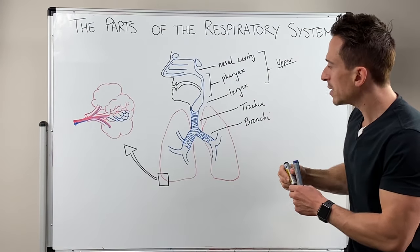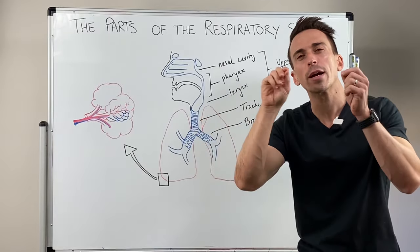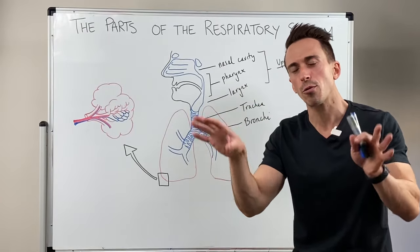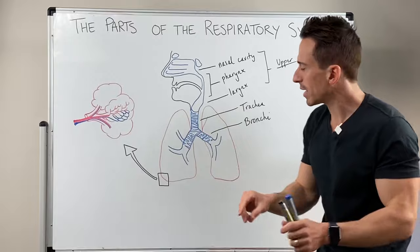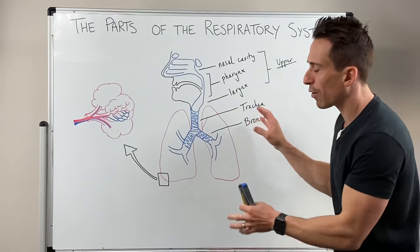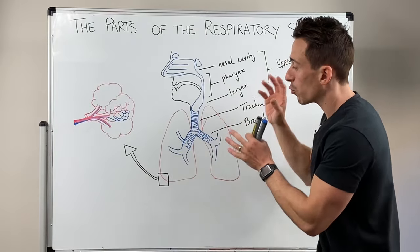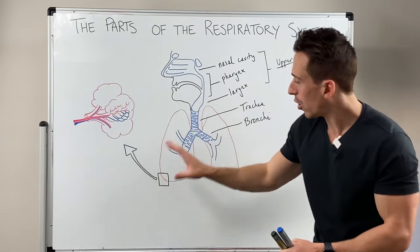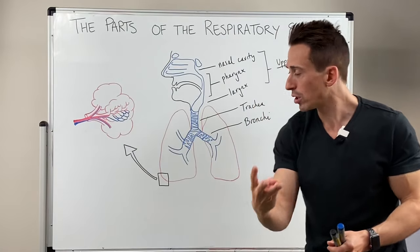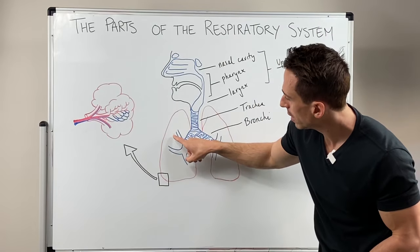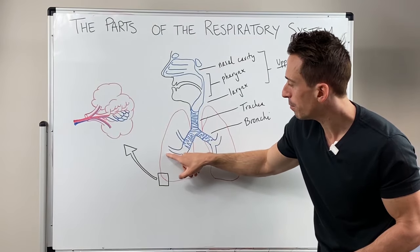Now these bronchi will continue to branch about 23 different times. What you'll find is that these various branchings result in, on the right hand side, three lobes of the lungs: upper, middle, and lower — or superior, middle, and inferior.